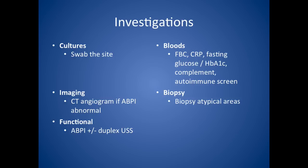Now looking at investigations, in the PodMedics way of doing this we look at cultures, bloods, imaging, biopsy, and functional tests. For cultures, swab the site. For bloods, think about FBC, C-reactive protein, fasting glucose or HbA1c, maybe a complement screen or autoimmune screen. For imaging, consider a CT angiogram if you suspect arterial ulceration. Consider biopsy, especially in an ulcer that's not healing — you might want to biopsy atypical areas. The functional test we all need to know is the ABPI, the Ankle Brachial Pressure Index.